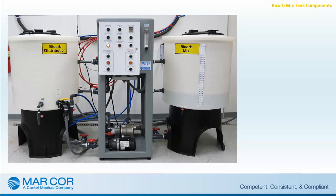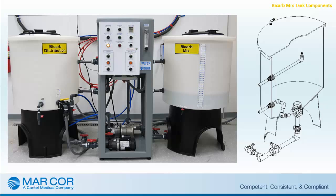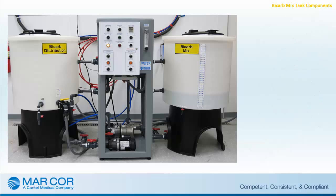Bicarb mixing components: The inlet solenoid valve serves to control the supply of water for the mix tank and rinsing procedure. The flow meter valve and flow meter provide flow rate adjustments and flow rate readings in gallons per minute or liters per minute. The mix tank is a high purity polyethylene tank with a conical shaped bottom and molded volume markings. The mix tank is equipped with a spray head for rinsing and disinfecting internal surfaces.